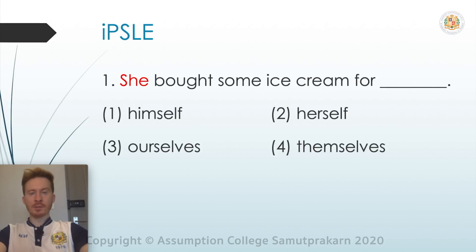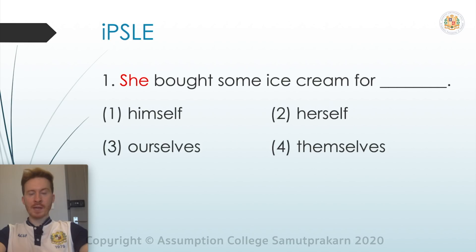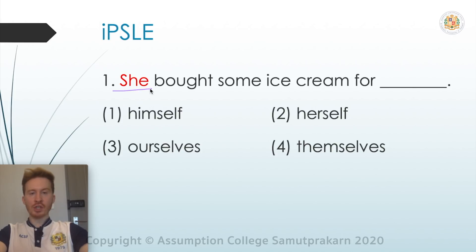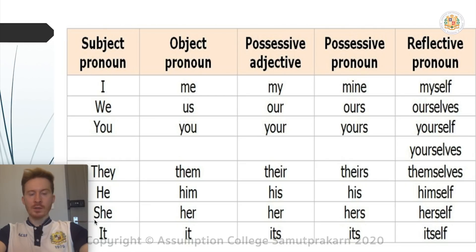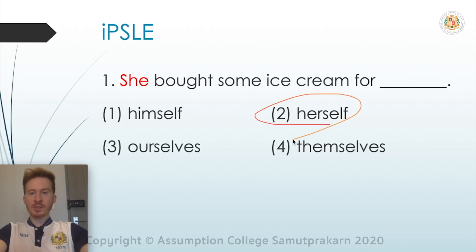Pause this video and try to answer by yourself. So let's take a look at the answer. She is a subject pronoun, and the answer must be a reflexive pronoun. We find the subject pronoun 'she' in the table and follow it across to the reflexive pronoun column — the reflexive pronoun for 'she' is 'herself'. So the answer is number two: herself.